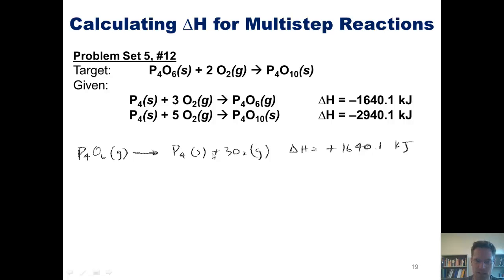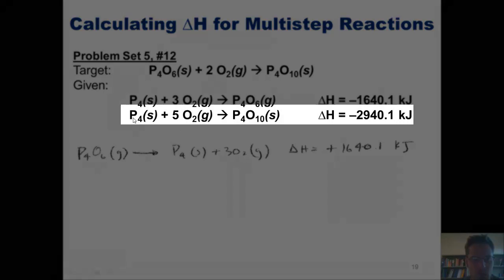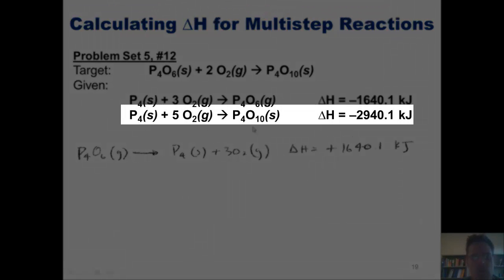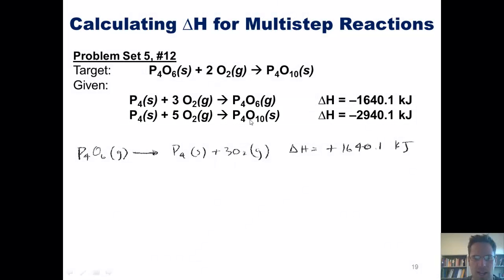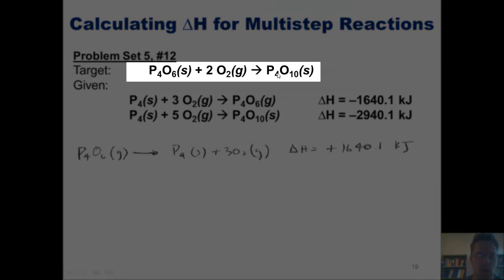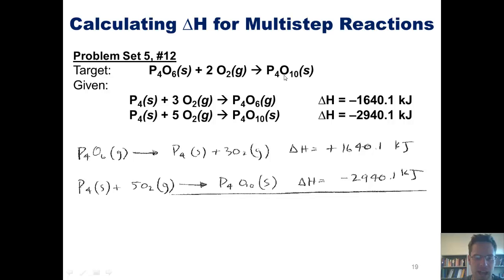The reason that I did that once again is because the P4O6 shown on the product side is not on the product side in my final destination. It's on the reactant side. Let's take a look at our next equation. Our next equation shown here has P4O10 on the product side. Our final destination, our target equation up here also has P4O10 on the product side. Thus I can leave that as is.